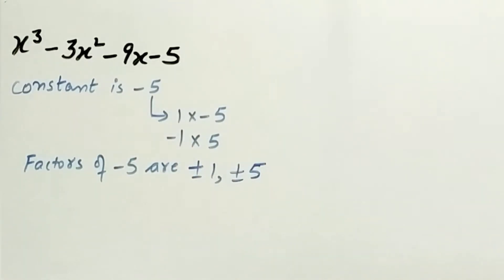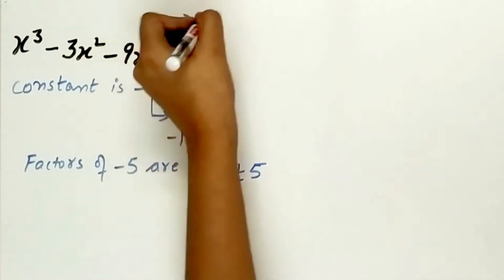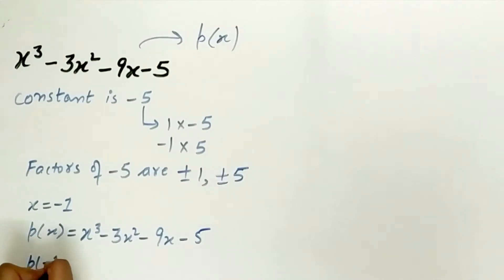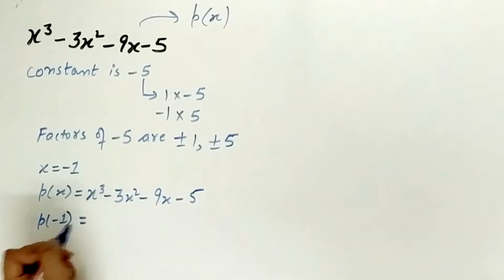Step 2 is to find that value of x for which p(x) becomes 0. So let x be minus 1. Now put x equals minus 1.